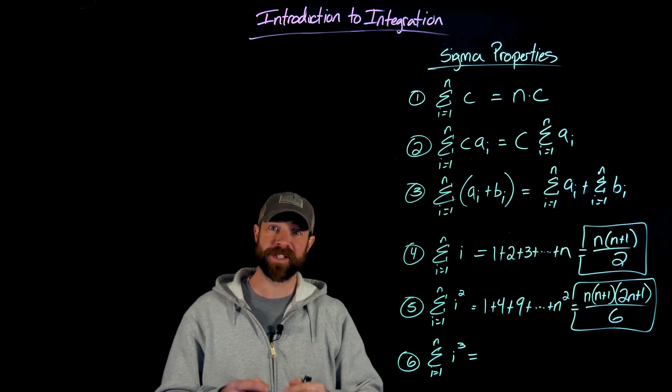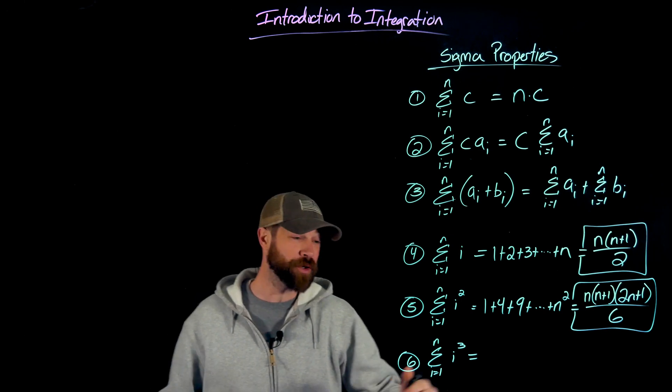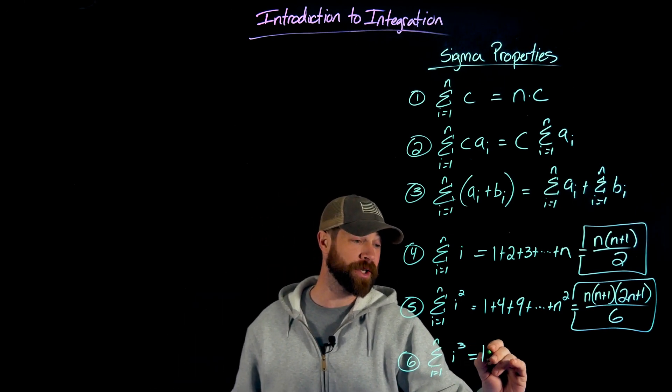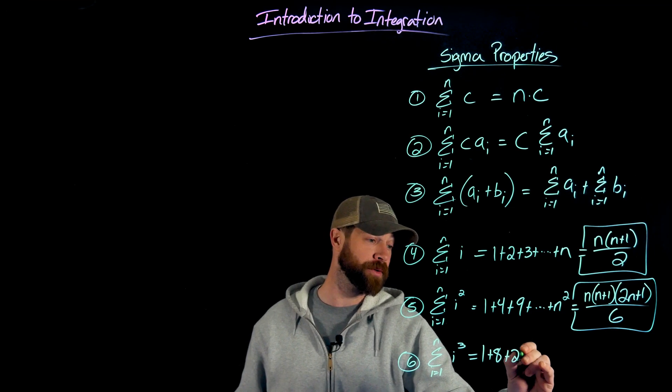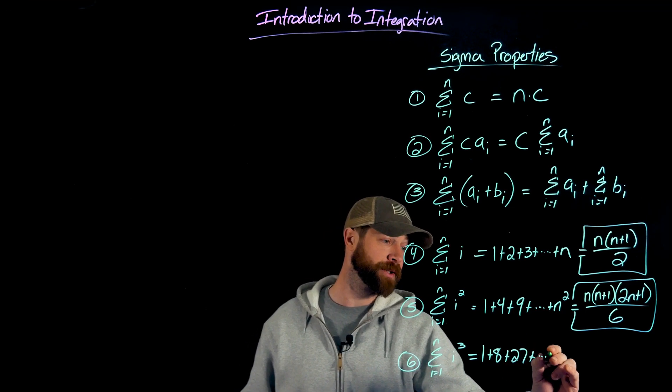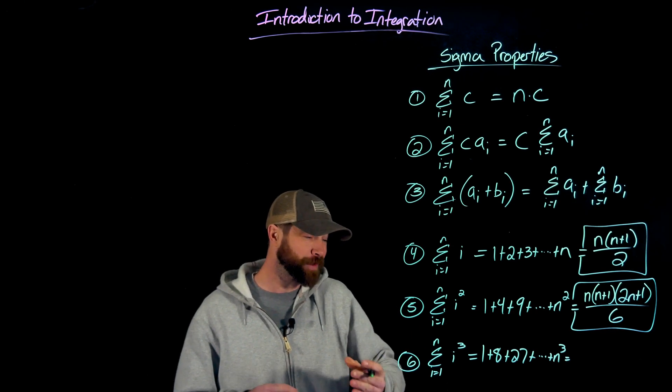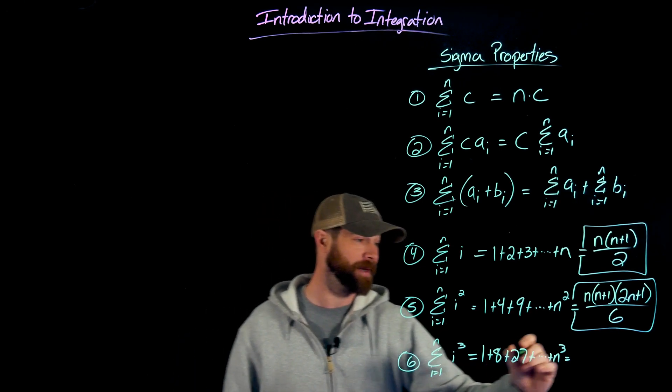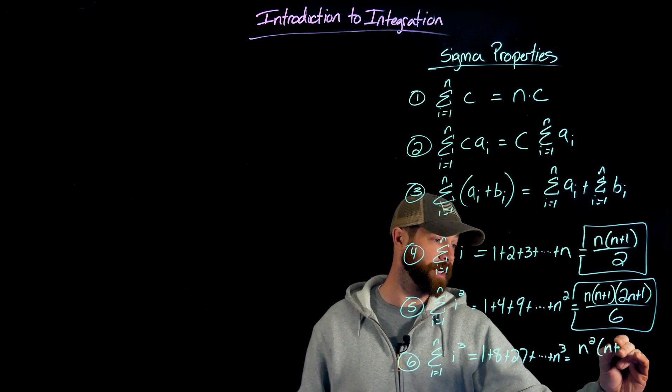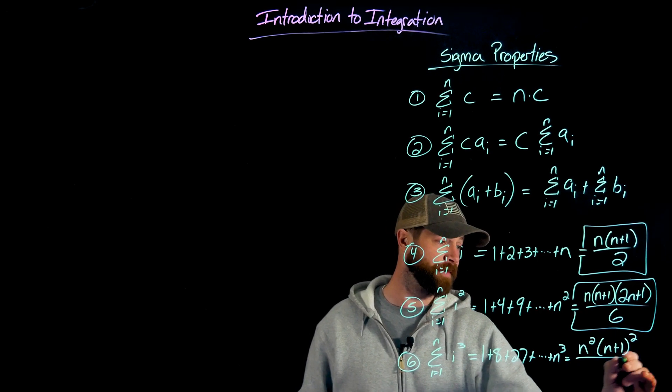And then for number six, we're just adding the first perfect cubes. In this case, this would be one cubed plus two cubed plus three cubed, all the way to n cubed. And the formula for evaluating those for any n starting from one to n would be n squared times n plus one squared over four.